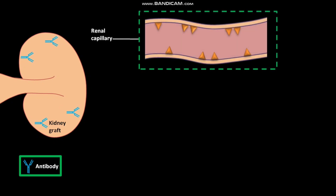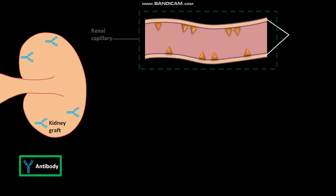Renal capillaries have endothelial walls, and these endothelial walls have antigens. The pre-existing host antibodies then bind to the antigens of the endothelial walls and activate the complement system.